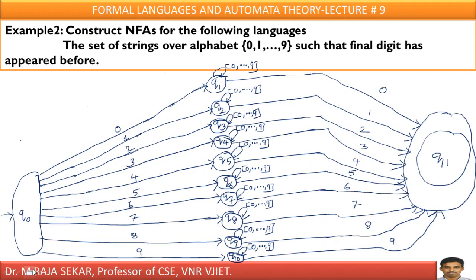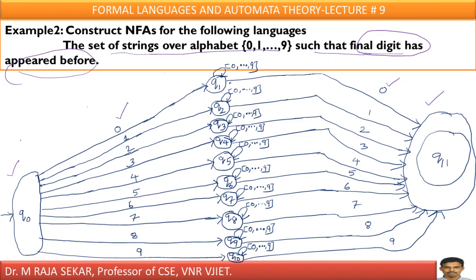Now just see this next example. Construct NFA for the following language: the set of strings over alphabet 0 to 9 such that the final digit has appeared before. For example, Q0 is the initial state and Q1 is the final state. Here, final digit means — in this case, 0 is the final digit. This final digit must have appeared before. So 0 is appearing here, and 0 is also appearing in between; any number of digits from 0 to 9 is allowed.